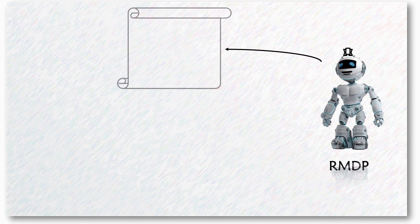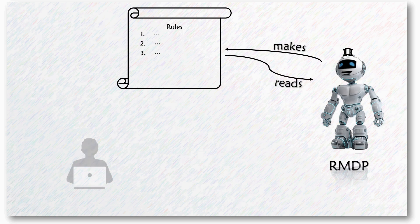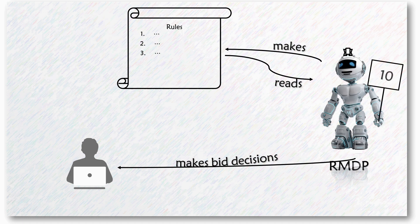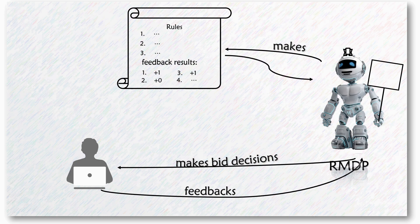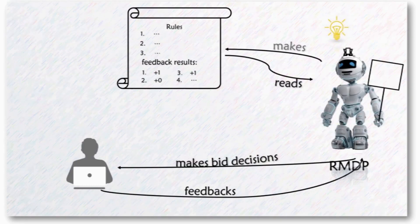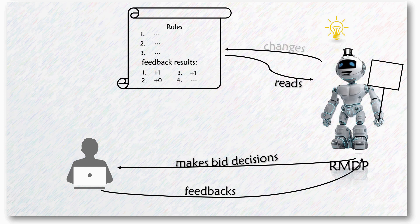In the situations of online advertising auctions, RMDP makes rules before he bids for a user impression. Then, according to these rules he makes, he helps the advertiser make a bid decision. When the feedback comes, he doesn't react immediately, but notes again. After a while, he begins to read all the feedbacks he noted and finally comes to an idea. So he changes the rules a bit. He can make better decisions.